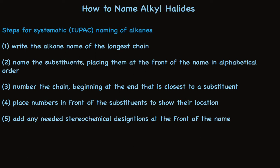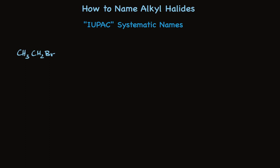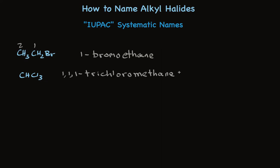You know that we would call the top compound ethyl bromide in common nomenclature. In systematic nomenclature, we find the longest chain — that's two carbons — and number it, beginning on the carbon that has a substituent. So this is ethane with a bromo substituent on carbon one: 1-bromoethane. Here's another small example: methane with three chlorines attached. We call this 1,1,1-trichloromethane. In these top two cases, there's only one way to number the compounds, so some people would simply leave off the numbers and call them bromoethane and trichloromethane.